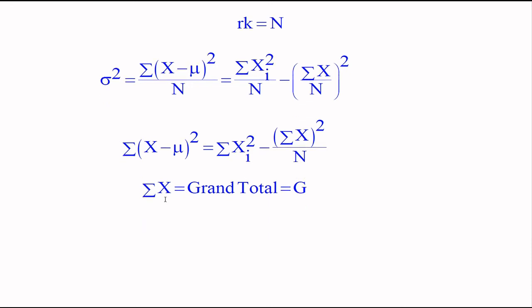This sum x equals grand total equals G. G squared over capital N. So this is the correction factor. If we take deviation from mean, this equals this because we convert it into raw sum of squares. So this is the correction factor and this is the sum of squares of xi. If we want to calculate sum of squares of xi, we take the square of each term minus the correction factor.